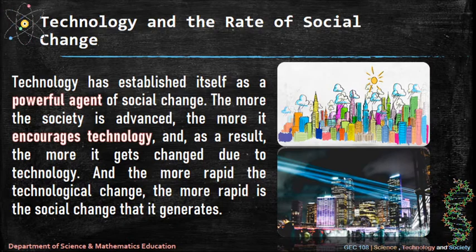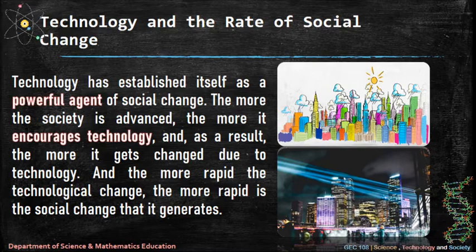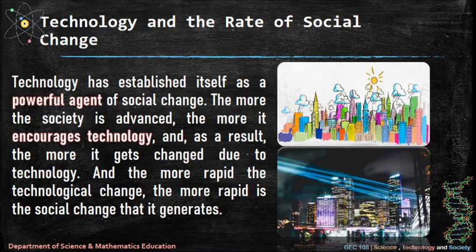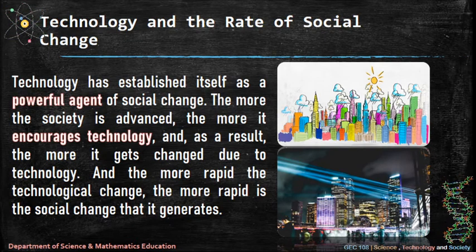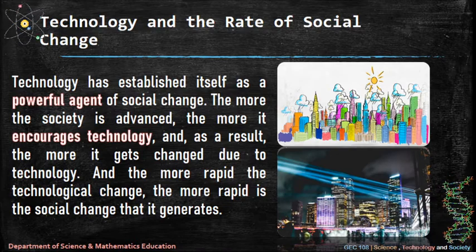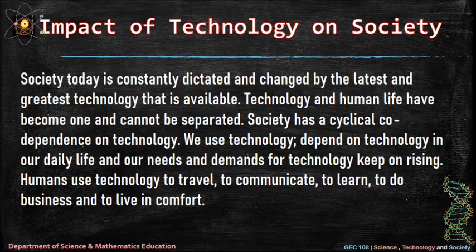Technological change is often seen as something that takes its own way. Technology has established itself as a powerful agent of social change. The more the society is advanced, the more it encourages technology, and as a result, the more it gets changed due to technology. The more rapid the technological change, the more rapid is the social change that it generates.